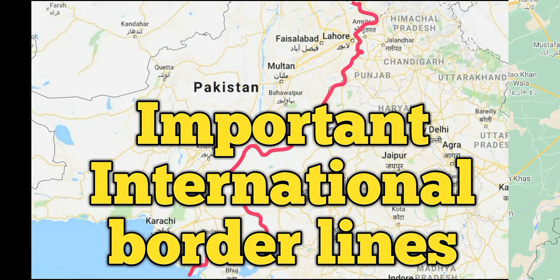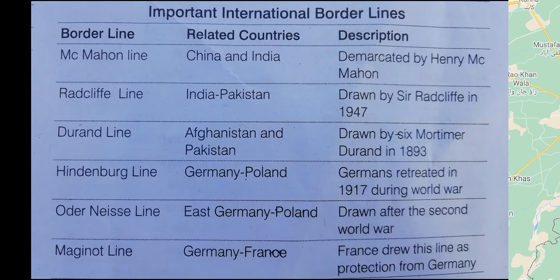Hi friends, welcome back to another informative video. In this video I am explaining about important international border lines and their related countries. Let's start. The McMahon Line is between China and India, demarcated by Henry McMahon.